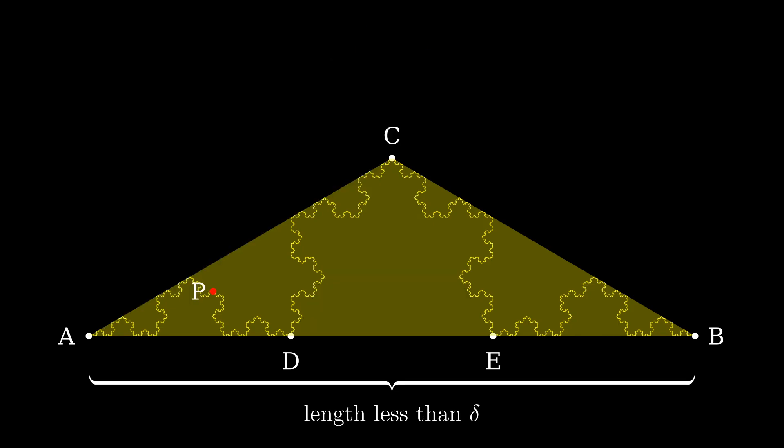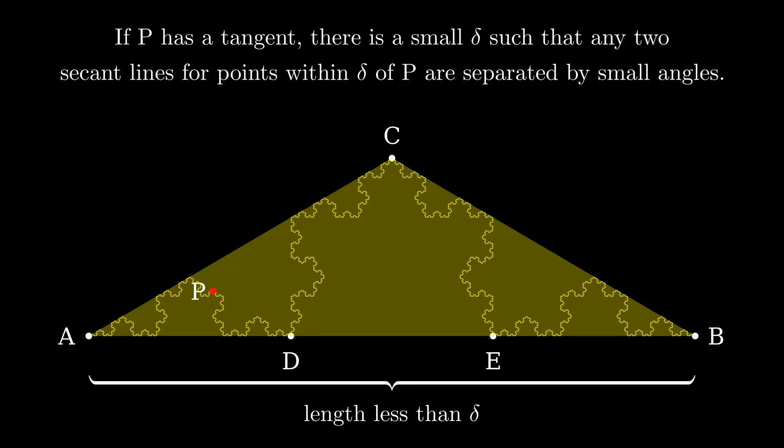Now if the Koch curve had a tangent at P, then we know that there would be a sufficiently small delta such that any two points on the curve within a distance delta from P and on the same side of P would form secant lines that are very close to each other with a small angle between them. But as we just saw, for any delta, no matter how small, there are always at least two points on the Koch curve that are on the same side of P and for which the angle between the two secant lines for those points is at least 30 degrees.